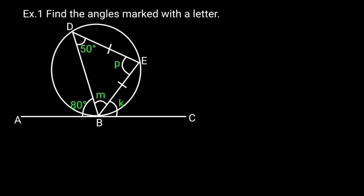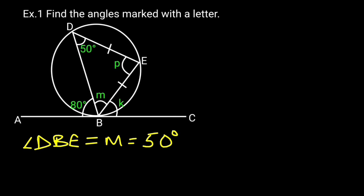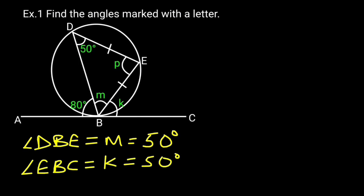Find the angles marked with a letter. Solution: Angle DBE, which is M, is equal to 50 degrees. Reason: Base angle of isosceles triangle. Angle EBC, which is K, is equal to 50 degrees. Reason: Angle in alternate segment.